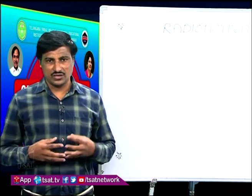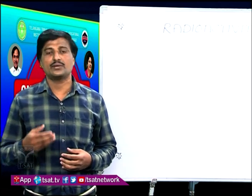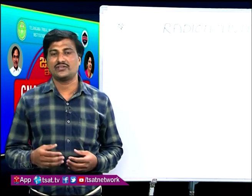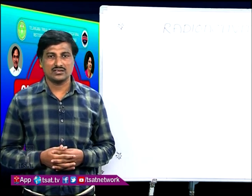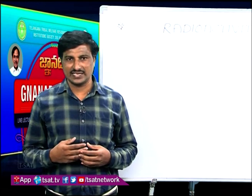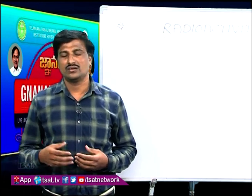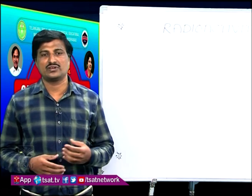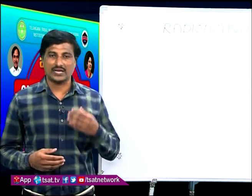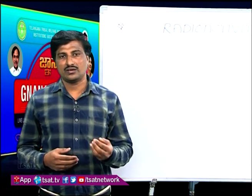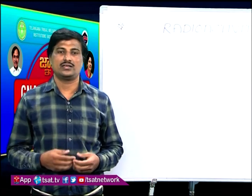Generally, all atoms whose atomic number is above 82 definitely exhibit radioactivity. One more thing: whenever radioactivity is taking place, alpha, beta, and gamma particles are emitted. Simultaneous emission of all these particles is not possible; however, they are emitted one after the other.